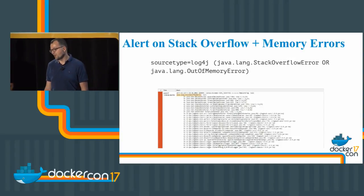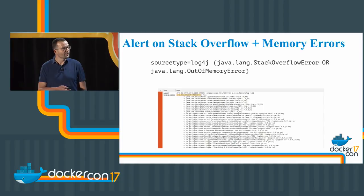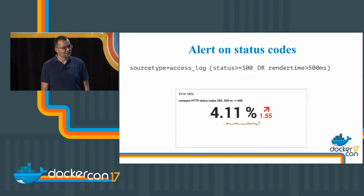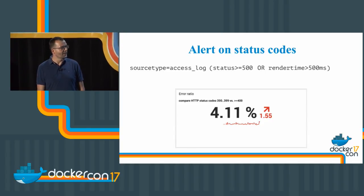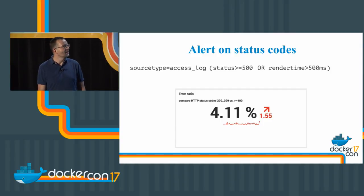Since we have all the Tomcat logs in Splunk, I can easily type a query to find a stack overflow or search for an out-of-memory error. You can build a dashboard or create an alert that pages you at midnight — or filter to only page if an alert comes from production rather than a test environment. We also massively use access log analytics in Splunk. Access logs are written from Apache or Nginx, and you can search for 500 server errors or render times beyond your expectation. You can calculate the percentage of good versus bad requests — 200s and 300s versus 400s and 500s — and alert on that.